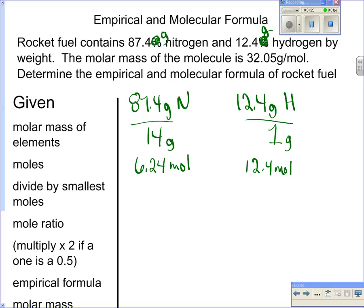So then the next step, the one that people seem to forget a lot, is that divide by the smallest moles. So I have to choose 6.24 or 12.4. Obviously 6.24 is smaller than 12.4. So I divide both of them by the 6.24, and that gives me my mole ratio, which comes out to be a 1 and 2.